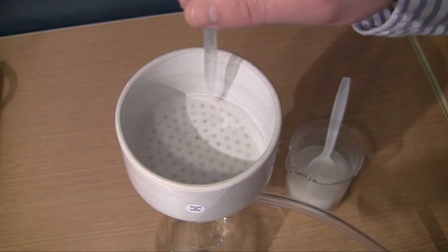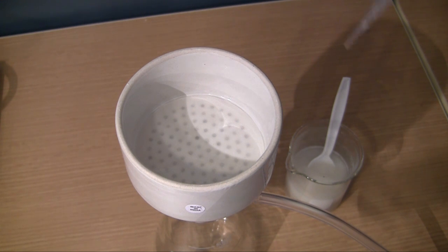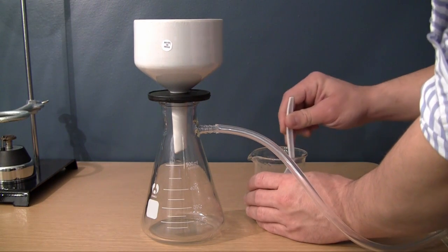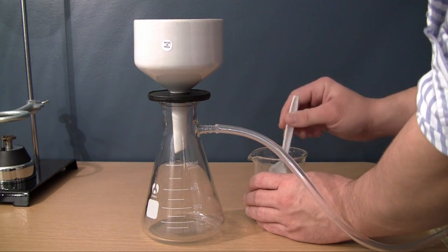So now, as you can see, our paper makes a really good seal and none of our mixture is going to go between the sides of the paper in the funnel. So now, of course, the only thing left to do is to go ahead and filter our mixture.